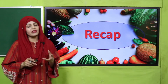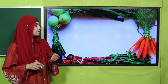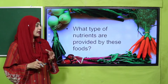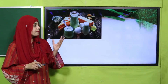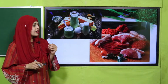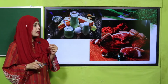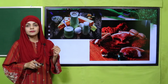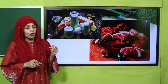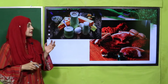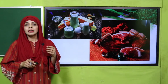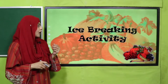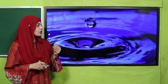Before that, let's quickly recap what we did in the previous lecture. Listen to the questions very carefully and then answer them. What type of nutrients are provided by dairy and meat? Very good, very nice — they provide proteins, carbohydrates, and fats.